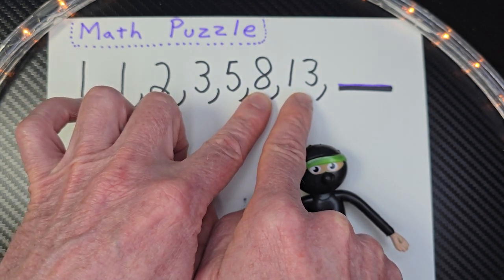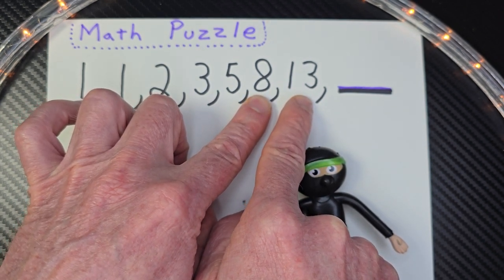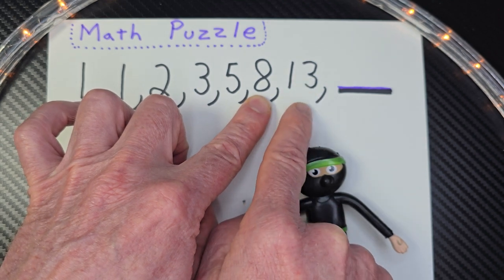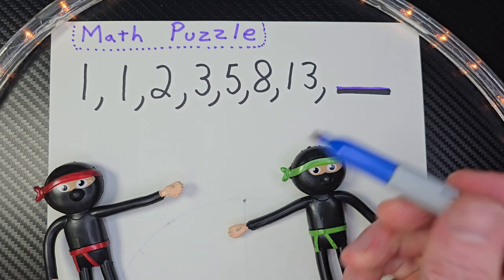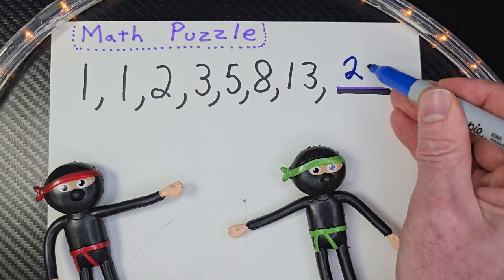How'd you do? So the next number right here would be thirteen plus eight, which would be twenty-one. So the answer is twenty-one.